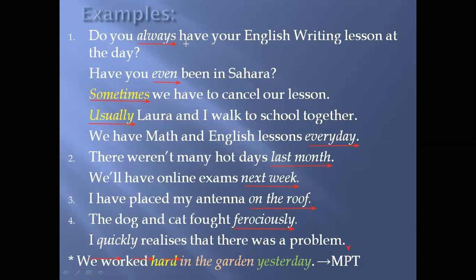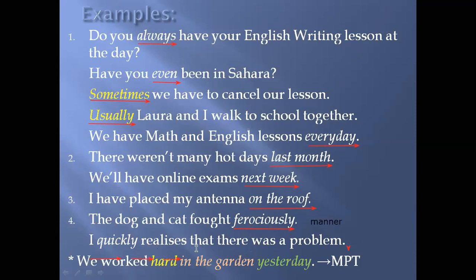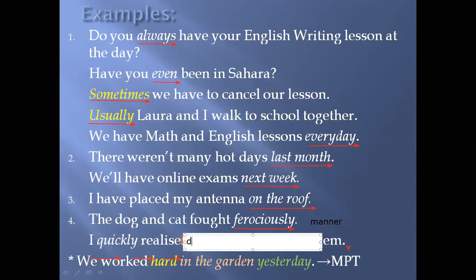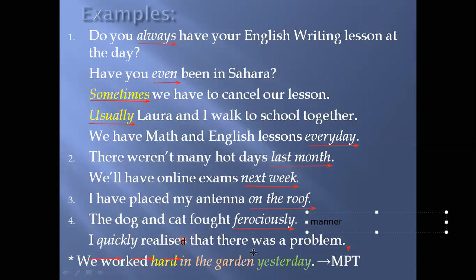'The dog and the cat fought furiously' — 'furiously' is an adverb of manner, describing how things were done. Next: 'I quickly realized that there was a problem.' Note there's a typing mistake here — it should be 'realized' with a 'd'. The adverb 'quickly' comes after the subject and before the verb, or can appear at the end of the sentence.